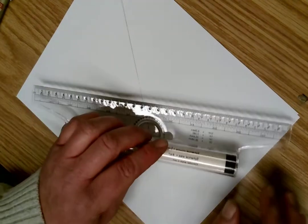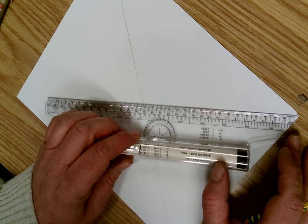Now I have my diagonal, and I repeat that same step going the opposite way.